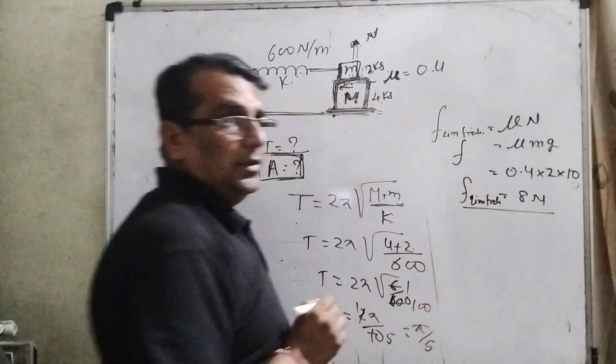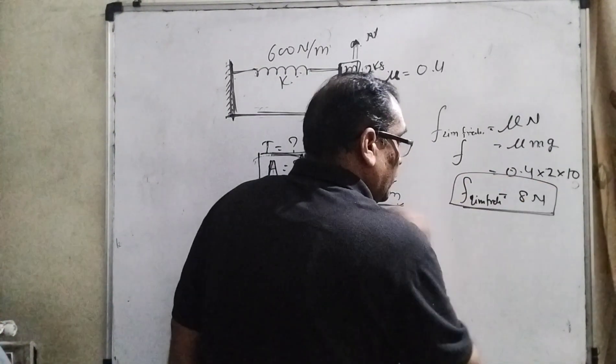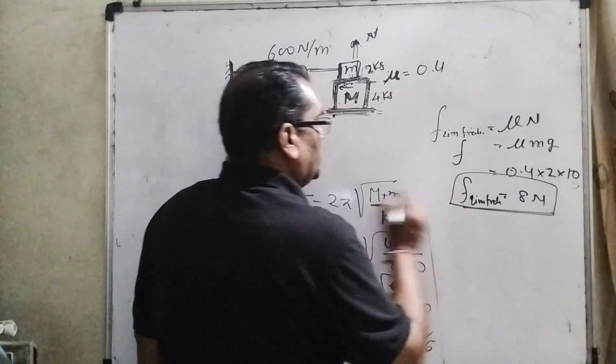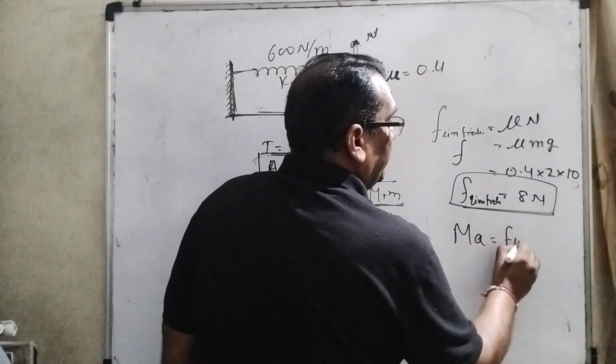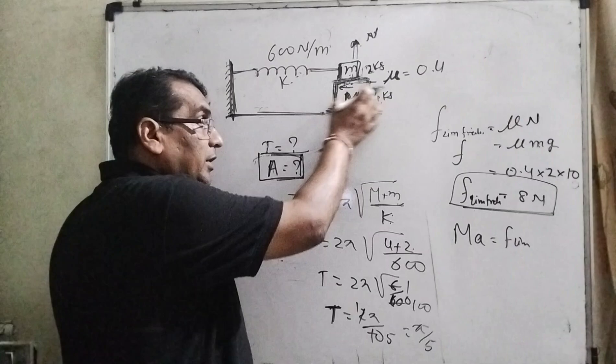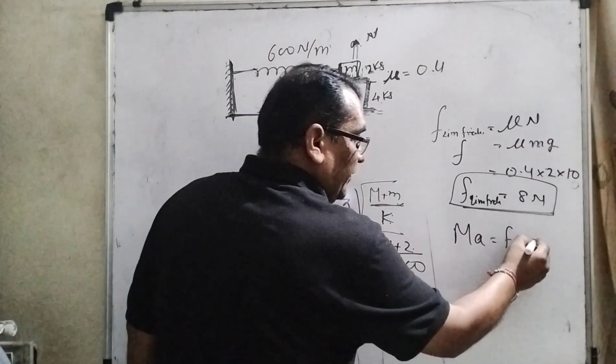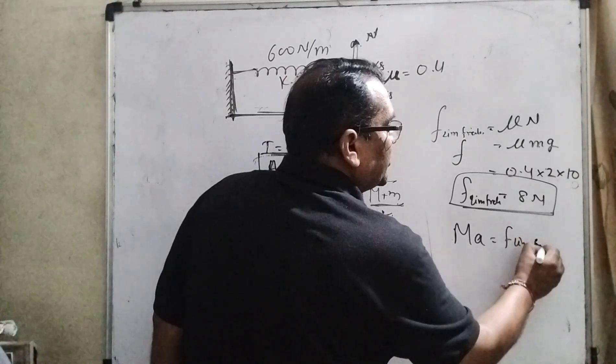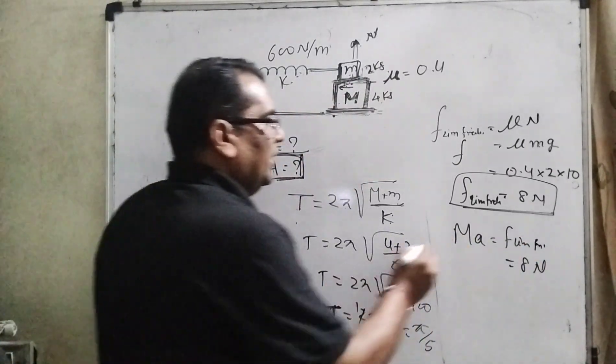Second thing, very important: this frictional force equals m times a. Why? Because they are moving together, so their acceleration, mass into acceleration, equals the limiting friction. So it equals 8 Newton. Is it clear?